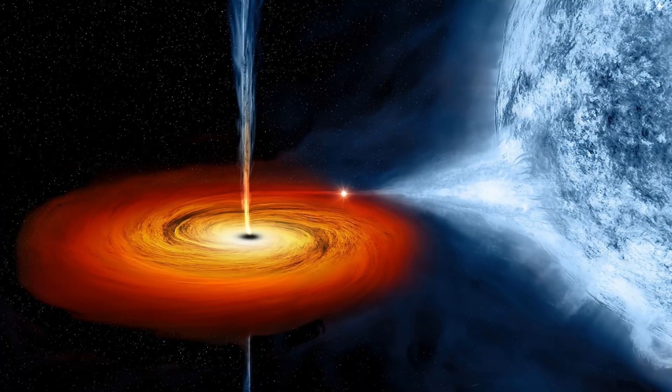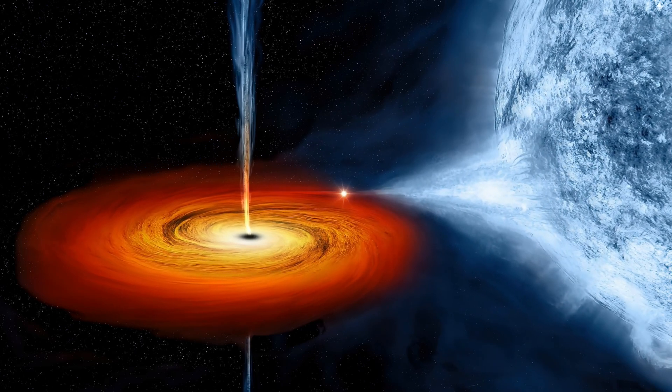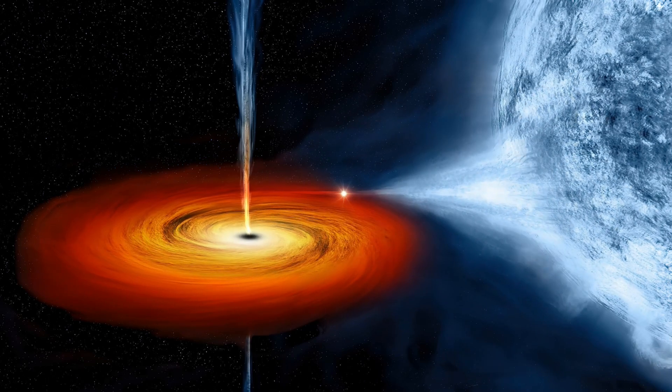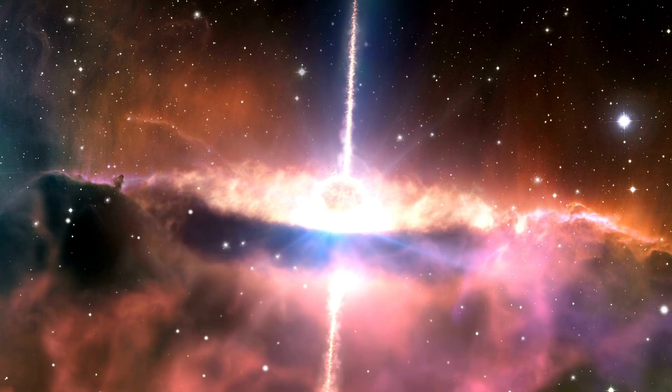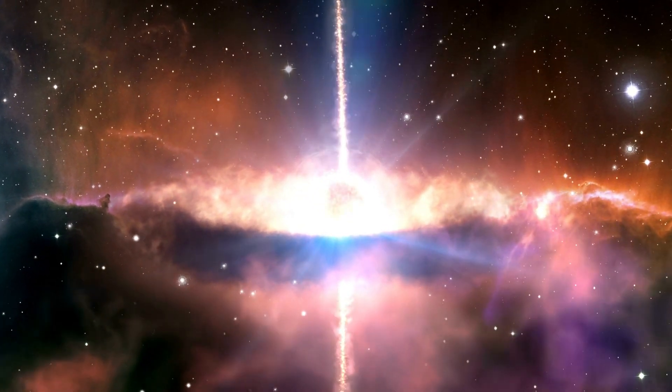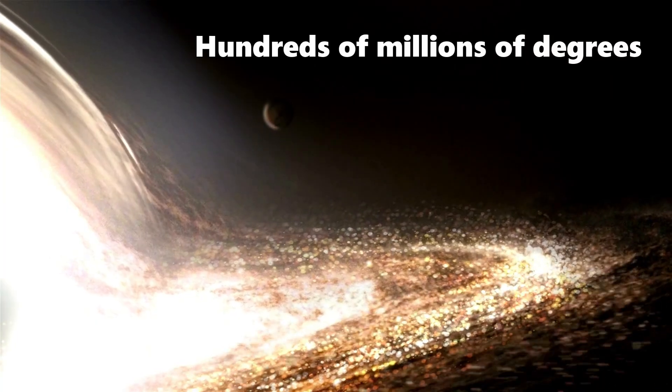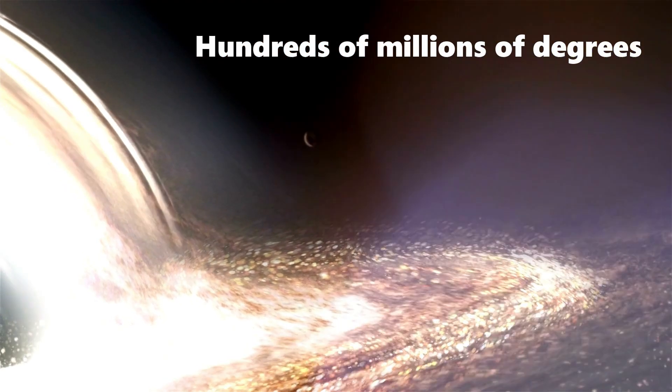On the outside of a black hole, however, the material being pulled into its gravity well is accelerated to a tremendous speed, near the speed of light. So the molecules of the material collide with such vigor that it is heated up to a temperature of hundreds of millions of degrees. This is why it's super hot outside of a black hole.